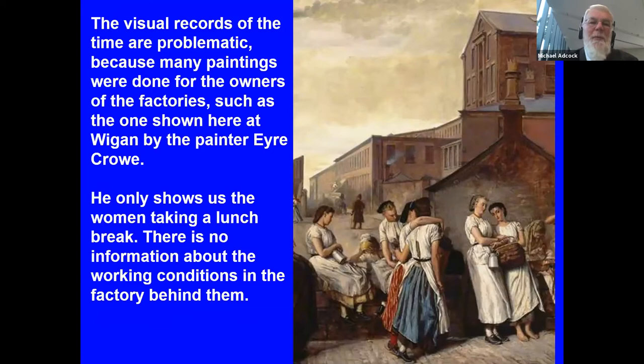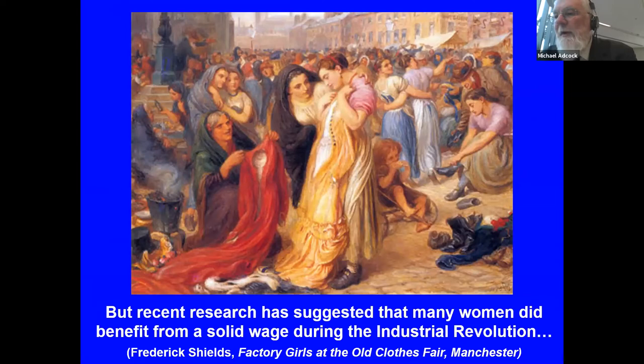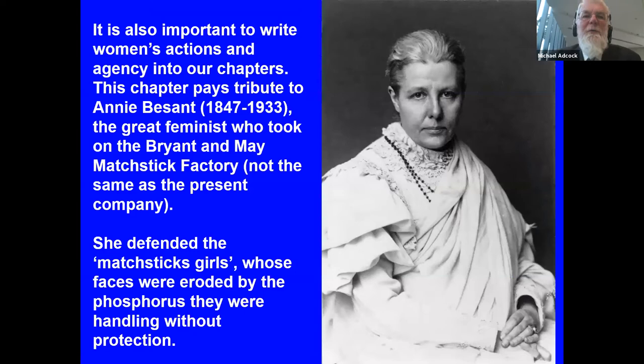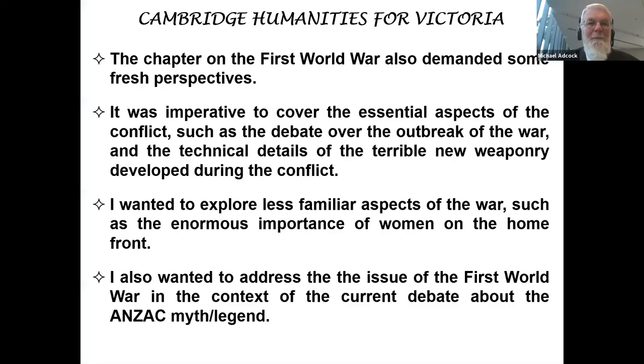I use some social conscience paintings, such as this one by Luke Fields, to set up the problem of reliability of sources. The poverty shown here really did exist, as did the harsh working conditions in factories. From this large body of visual sources, it is tempting to conclude that the Industrial Revolution was indeed one of dark satanic mills. But how did women experience that era? The visual records are actually problematic because many paintings were done for the owners of factories — the painter shows only women taking a lunch break, with no information about working conditions or the crushing long shifts.